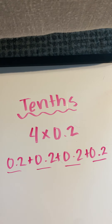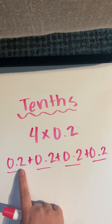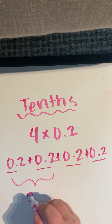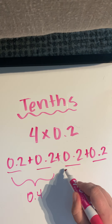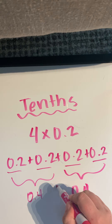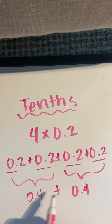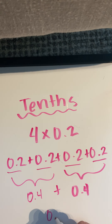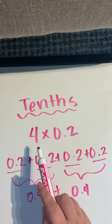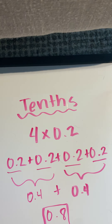Okay, guys. So let's talk about how we did this. If I have 0.2 plus 0.2, that's going to give me 0.4. And I can do the same thing over here — 0.4. Don't forget to bring the addition sign down. Then I can just add those up. So 0 point — what's 4 plus 4? 8. So you should have gotten 8 tenths, or 0.8, as your answer for 4 times 0.2.